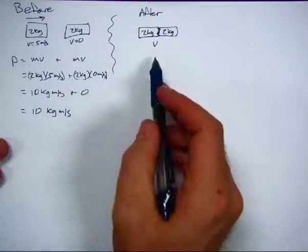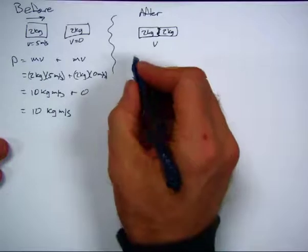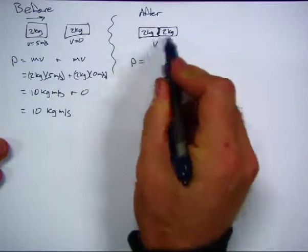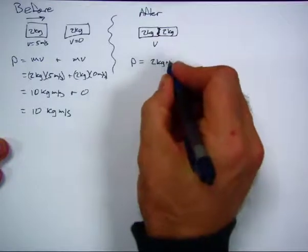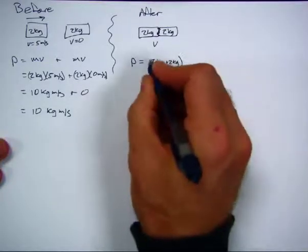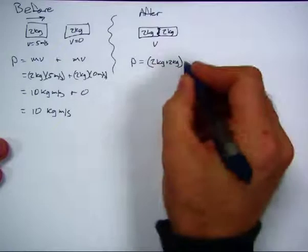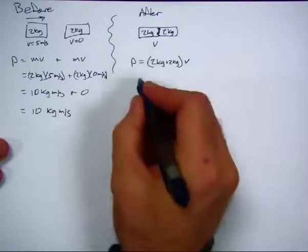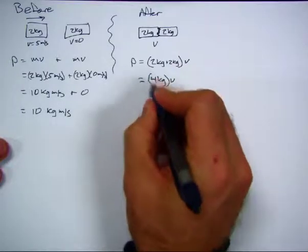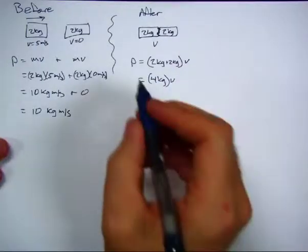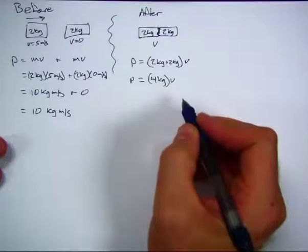Let's do the same thing after the collision. After the collision, the two cars are combined together now, so it's 2 kilograms plus 2 kilograms—that's my total mass times velocity. But I don't know the velocity, so the momentum is 4 kilograms times the velocity. That's the best I can do for now.